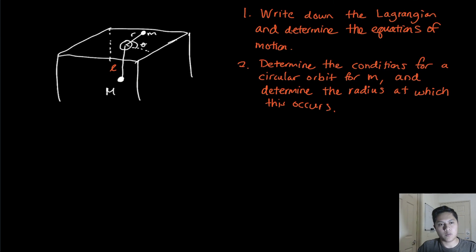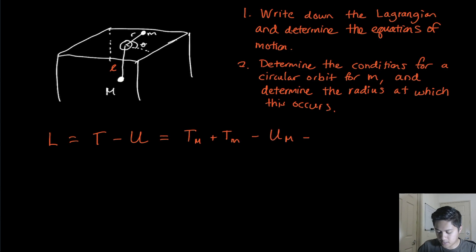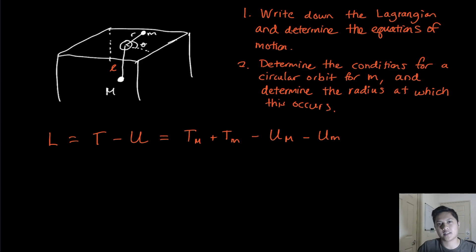We're going to determine the Lagrangian and the equations of motion from that Lagrangian. Recall that the Lagrangian is defined as the kinetic energy T minus the potential energy U. We can further divide this as the kinetic energy of big M plus the kinetic energy of little m, minus the potential energy of big M minus the potential energy of little m. We take the Lagrangian of each mass and add them together.